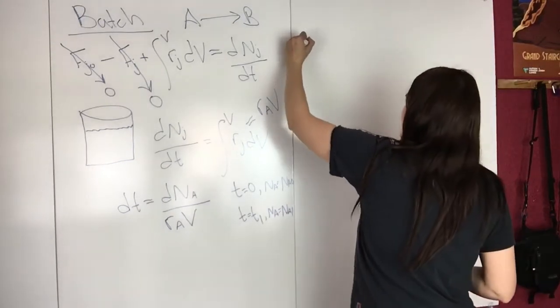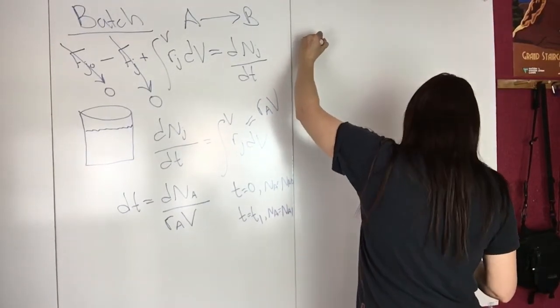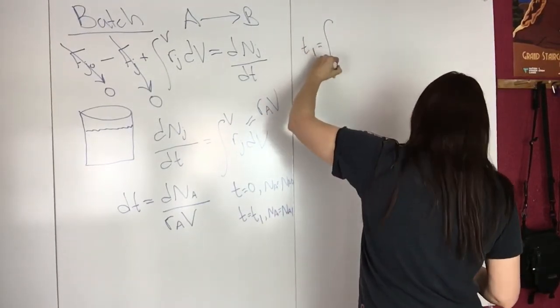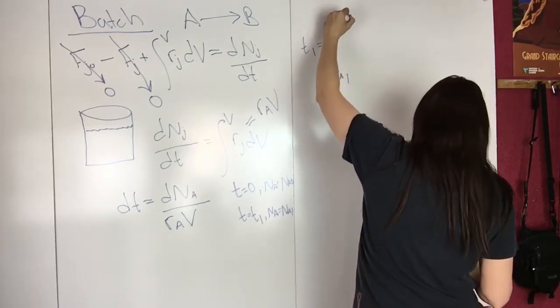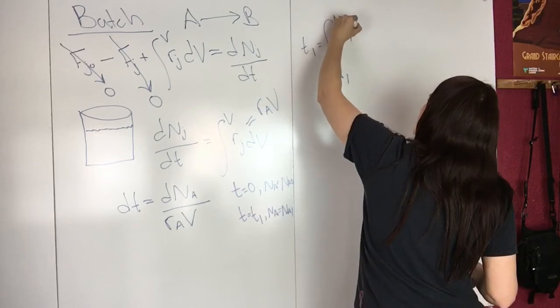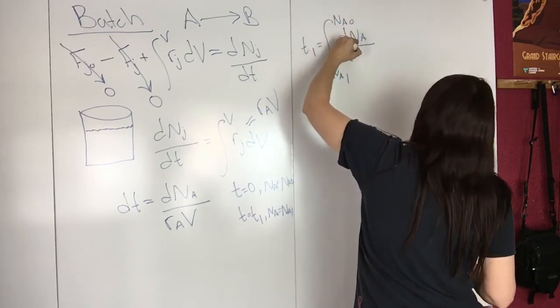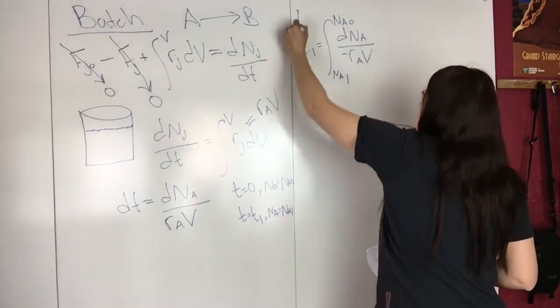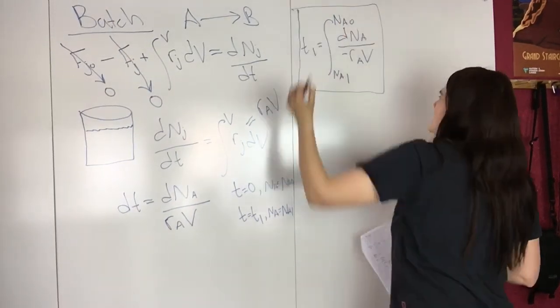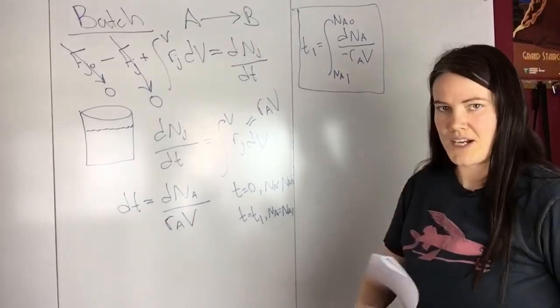you end up with t1 equals the integral from NA1 to NA naught of dNA over negative RA times V.